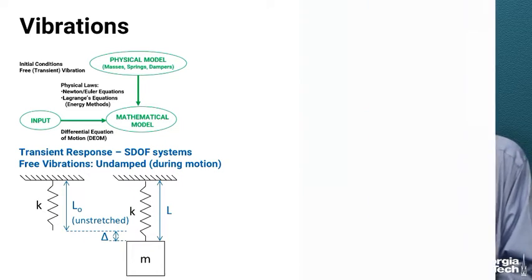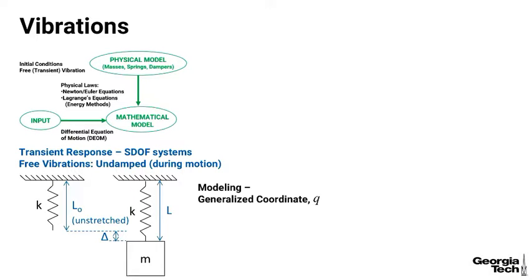I'm going to assign a generalized coordinate for the motion of this system, and I'm going to use the coordinate q. Q is going to be measured from that static equilibrium position downward, so the motion is going to be about that static equilibrium position. The initial conditions will be given as q(0) equals some initial displacement and q-dot(0), the velocity at time zero.